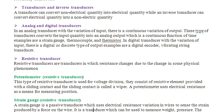In an analog transducer, with the variation of input there is a continuous variation in output. This type of transducer converts the input quantity into an analog output which is a continuous function of time. Examples include strain gauge, thermocouple, and thermistor.